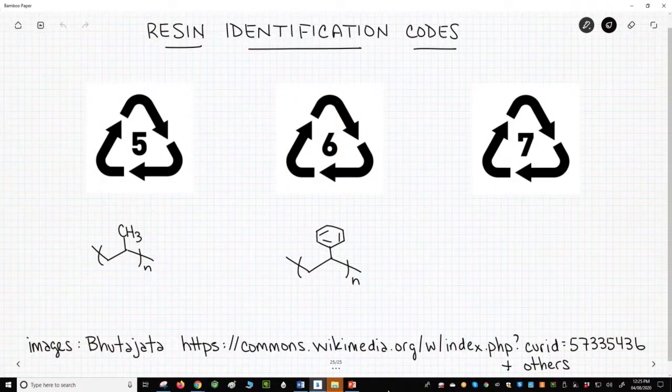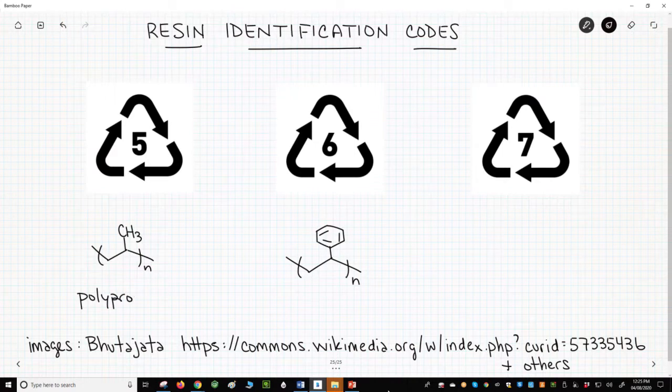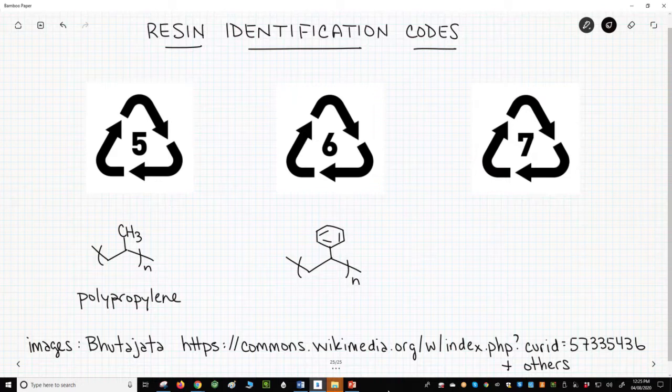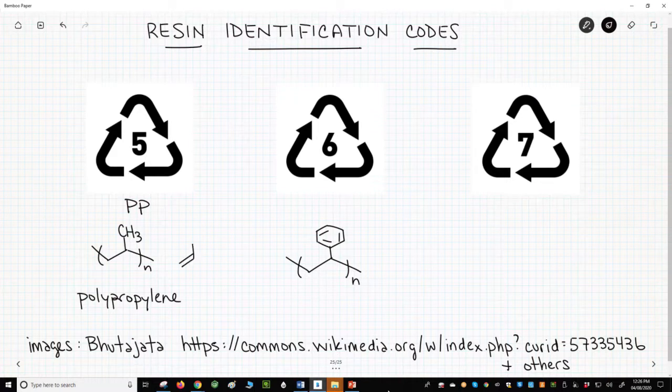Code number 5 is for polypropylene, or PP. Polypropylene is an addition polymer made from propylene. One example of polypropylene is in food containers, like yogurt or sour cream tubs.